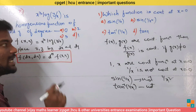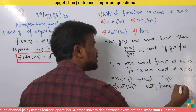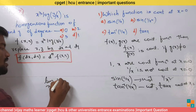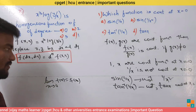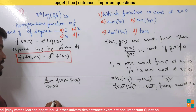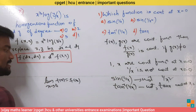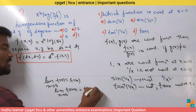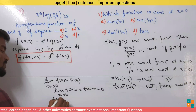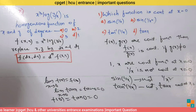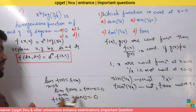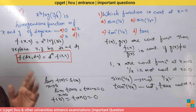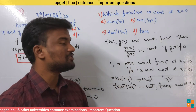Option D: tan x. Tan x is a continuous function at x equals 0. The proof: a function f is continuous at x equals 0 if the limit as x tends to 0 of f(x) equals f(0). Here f(x) equals tan x. The limit as x tends to 0 of tan x equals tan 0 equals 0, and f(0) equals tan 0 equals 0. Since both values are equal, tan x is continuous at x equals 0.